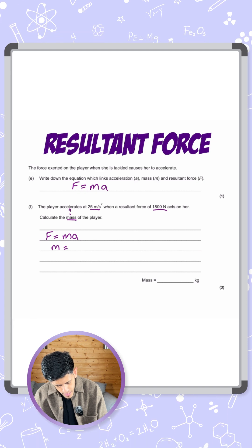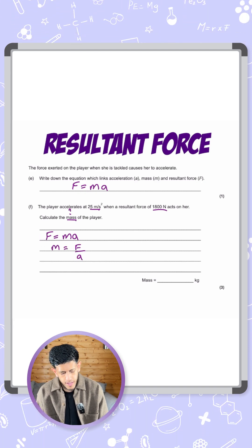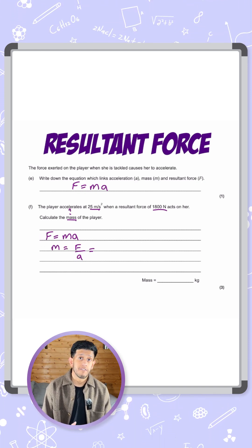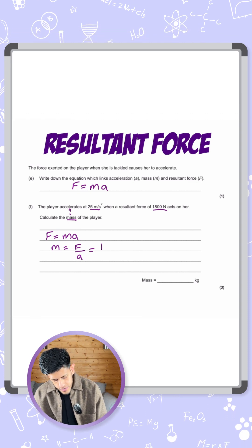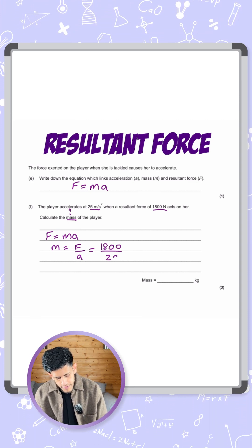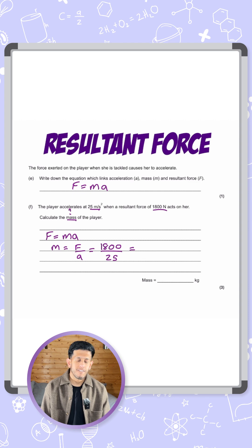And now simply I just substitute in the numbers that I've got in the question. So that's 1800 for the resultant force divided by 25 for the acceleration.